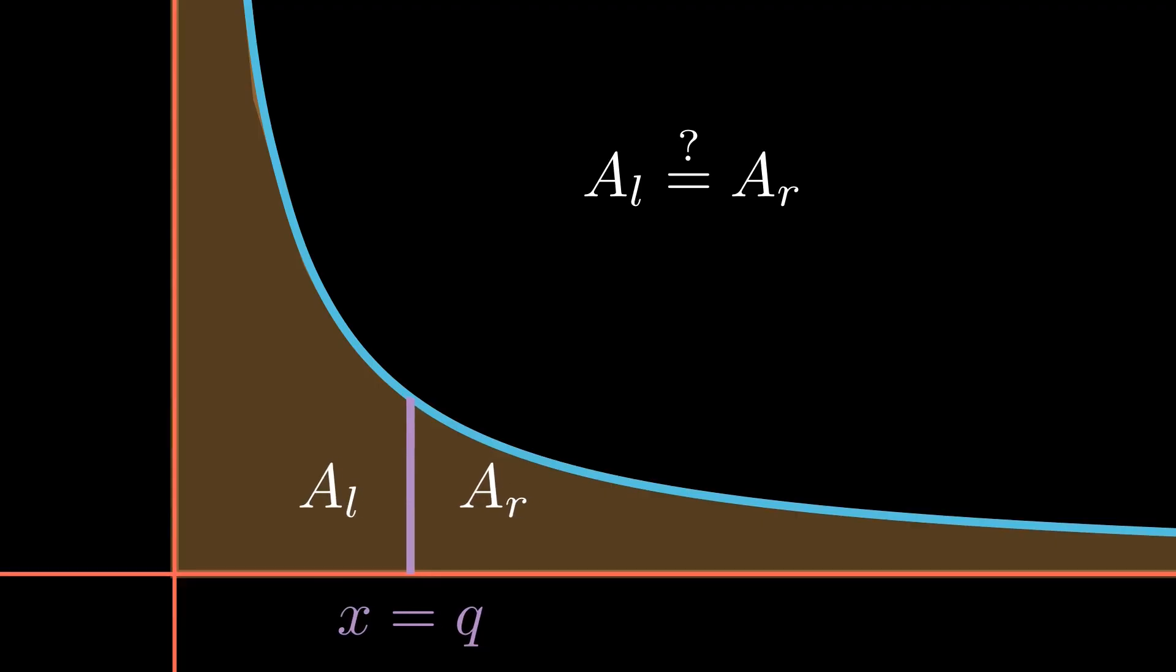I will also claim that there does exist some value for q such that these two areas are equal. The question we want to answer is, what value does q have to be such that the area to the left is equal to the area to the right?